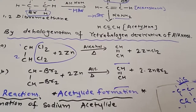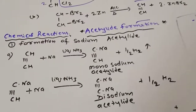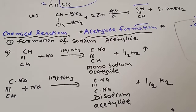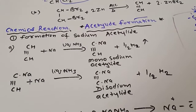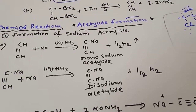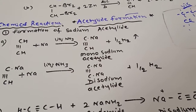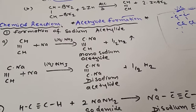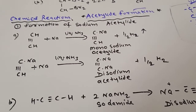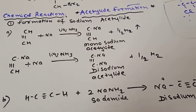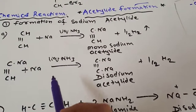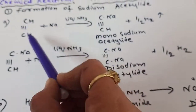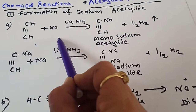Next are the chemical properties of alkynes. Acetylide formation is a very important property of alkynes because of the presence of two pi bonds and the acidic hydrogens in the structure. I will explain the acidity of alkynes later in this video. Now let us see how the acetylides are formed.